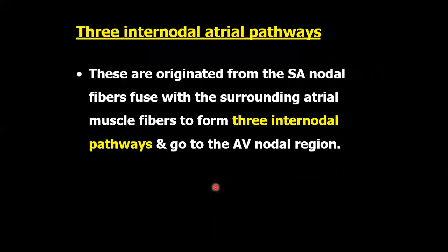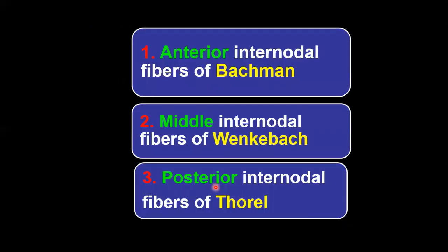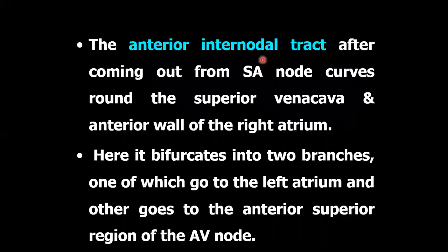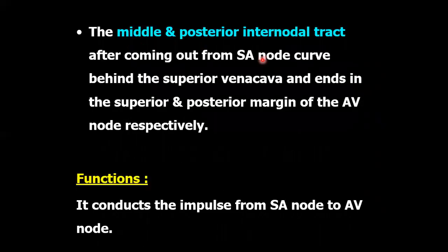There are three internodal atrial pathways through which the impulse travels from the SA node to the AV node. These are: the anterior internodal fibers of Bachmann, the middle internodal fibers of Wenckebach, and the posterior internodal fibers of Thorel. The function of these internodal atrial pathways is to conduct the impulse from the SA node to the AV node.